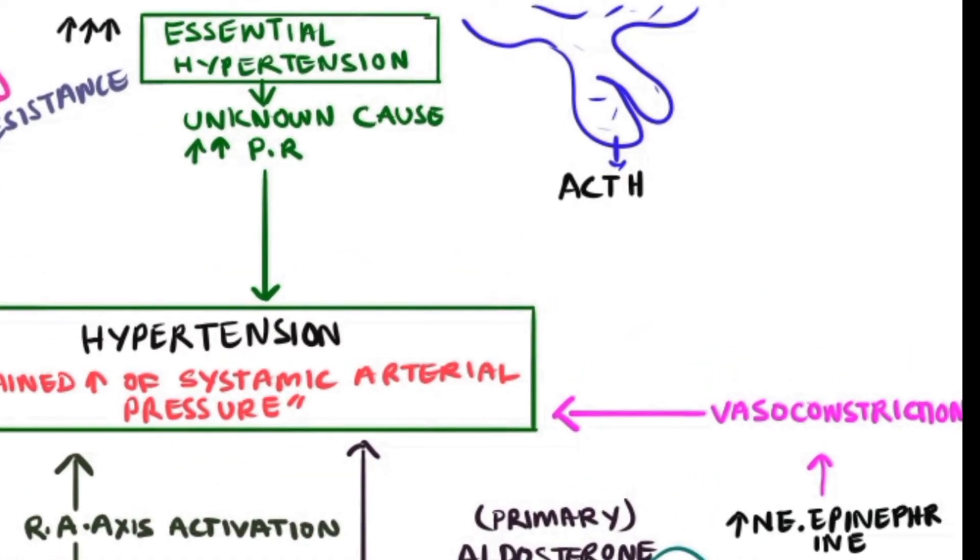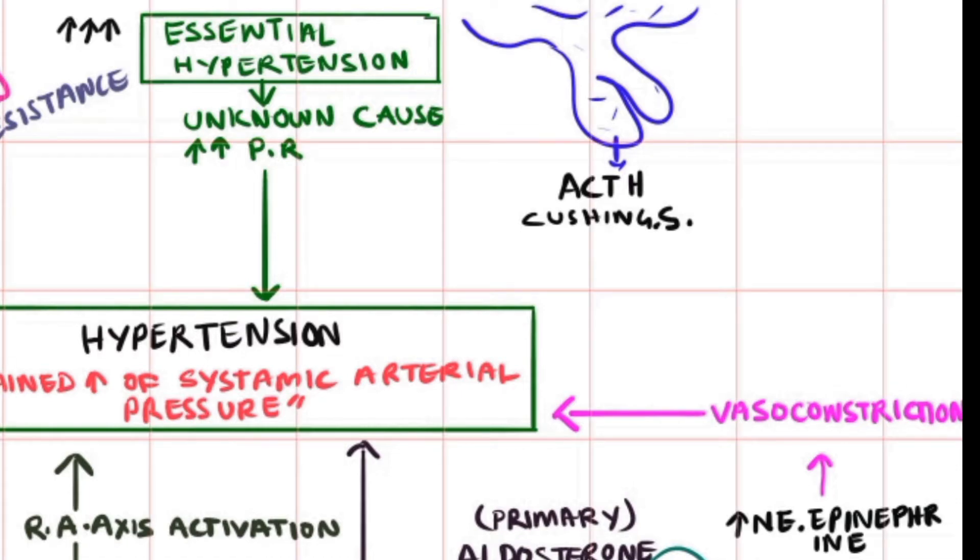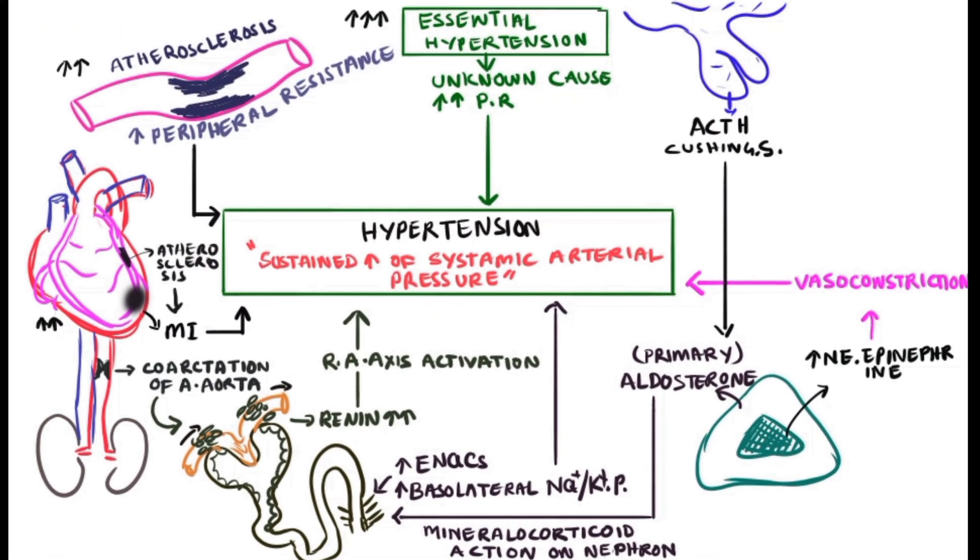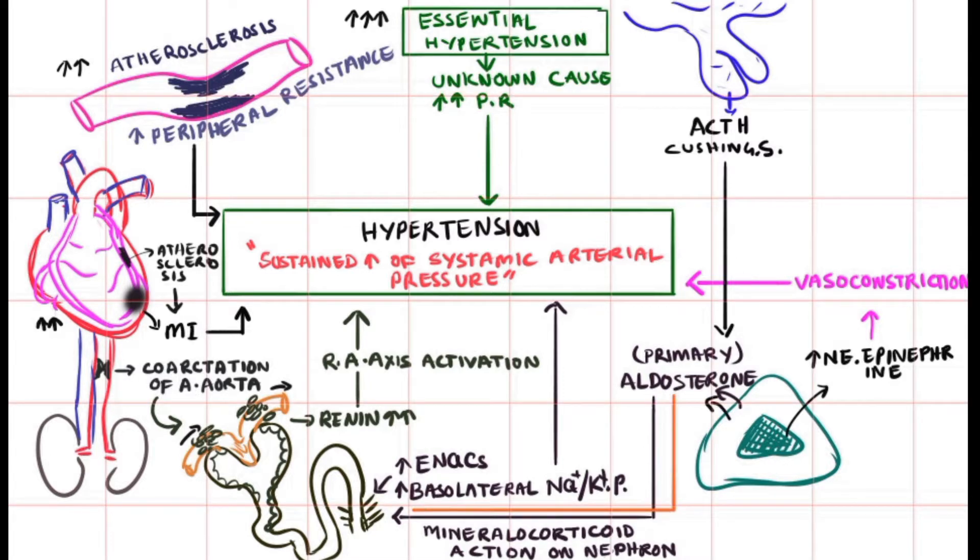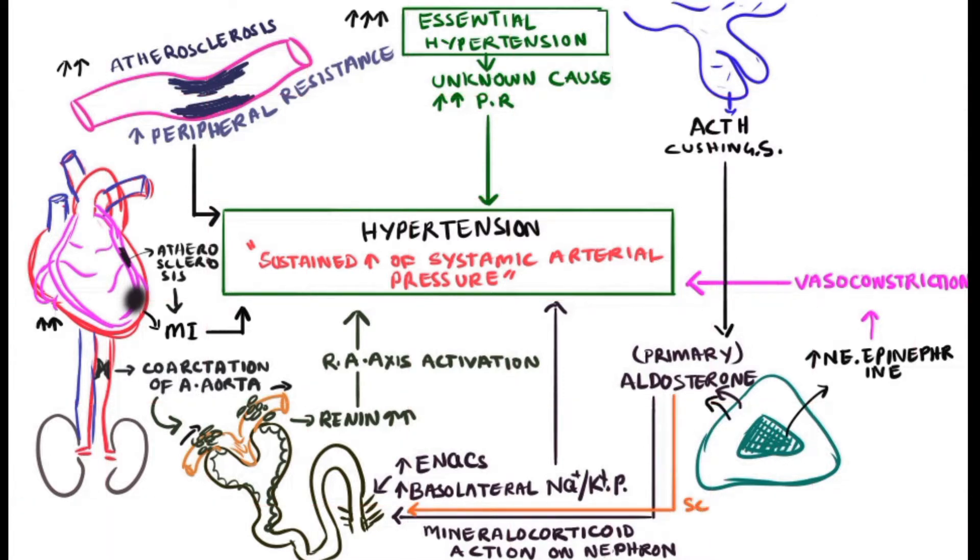At times, aldosterone secretion may be caused by excess ACTH from the anterior pituitary gland under Cushing syndrome, further stimulating aldosterone secretion cells from the zona glomerulosa. This comes under the secondary activity of aldosterone excess, further increasing sodium retention by epithelial sodium channels and basolateral sodium-potassium pump, leading to hypertension.